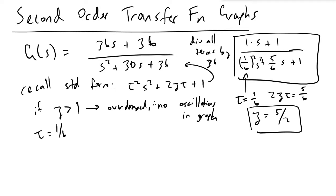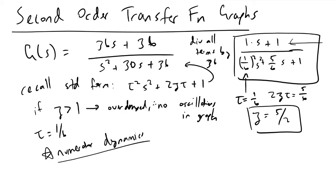The last piece of information we obtain from this transfer function is that we have numerator dynamics. If we place our numerator into its standard notation, which is tau_a times s plus one, we see that tau_a equals one. Because tau_a, the time constant in the numerator, is greater than tau, the time constant in the denominator, we will have overshoot.